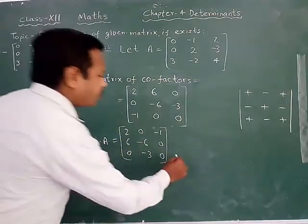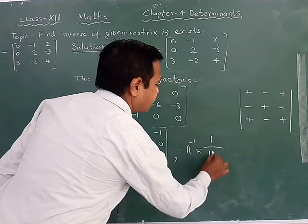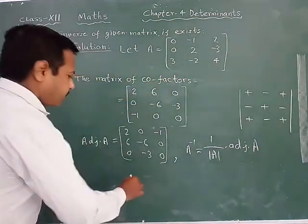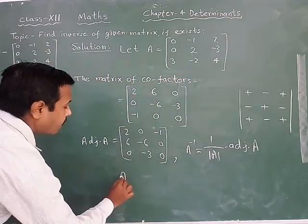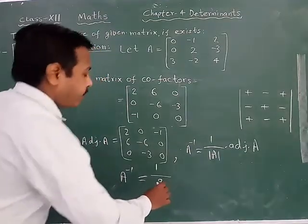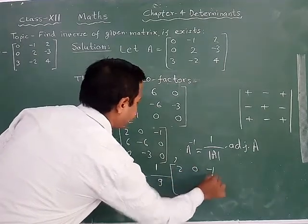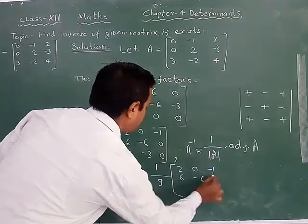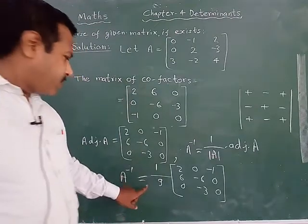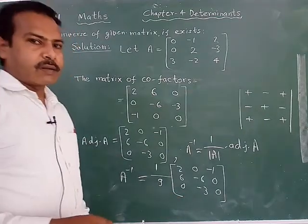Finally, A inverse is equal to one upon determinant A into adjoint A. So A inverse is equal to one upon 9, and adjoint A is the matrix: 2, 0, minus 1 / 6, minus 6, 0 / 0, minus 3, 0. And this is the inverse matrix of A, and it is your answer. Thank you.